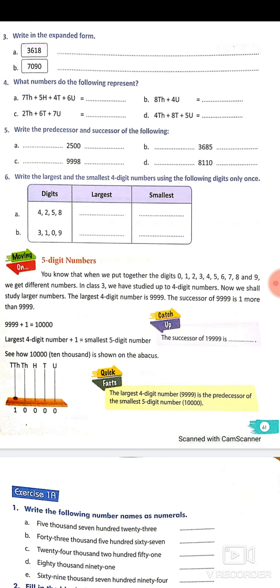You know that when we put together the digits 0, 1, 2, 3, 4, 5, 6, 7, 8, 9, we get different numbers. In class 3 we have studied up to 4-digit numbers. Now we shall study larger numbers.